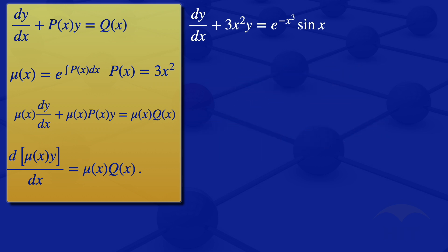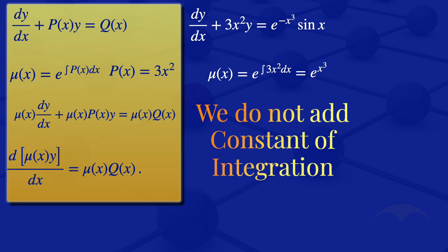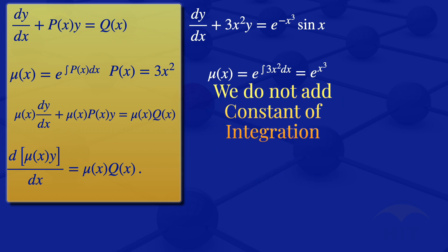The integrating factor is given by this formula. So our integrating factor will be equals to the exponent of the integral of 3X squared with respect to X. The integral of 3X squared with respect to X is X cubed. Note that when we are evaluating the integrating factor we do not add the constant of integration.